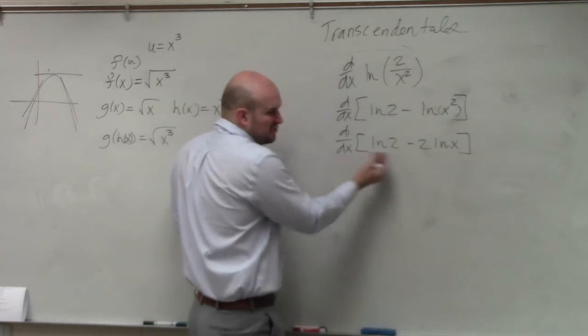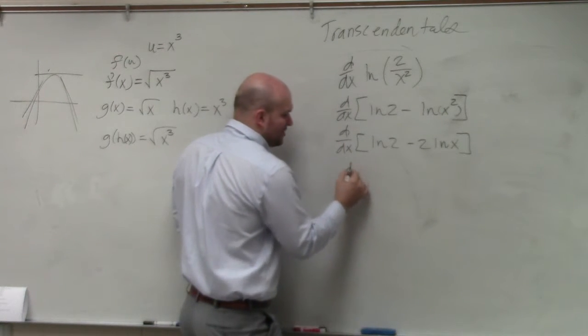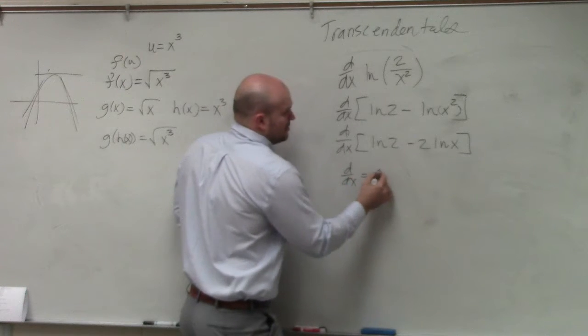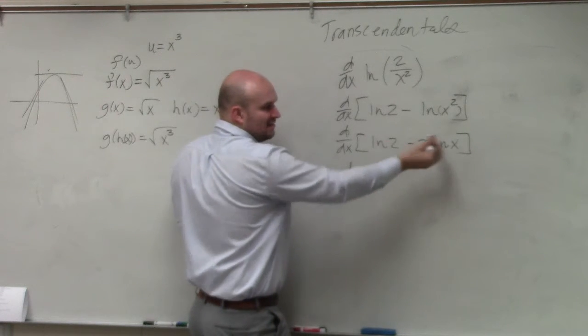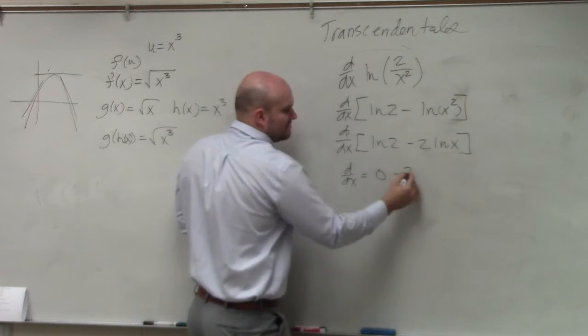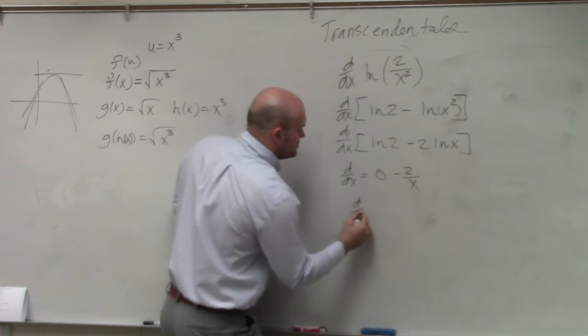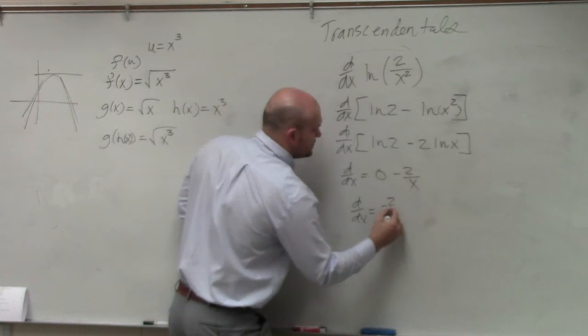Because now, ln of 2, derivative of ln of 2, that's just 0. Here, take the constant out, it's just derivative of ln of x. So it's negative 2 over x. So d over dx equals negative 2 over x.